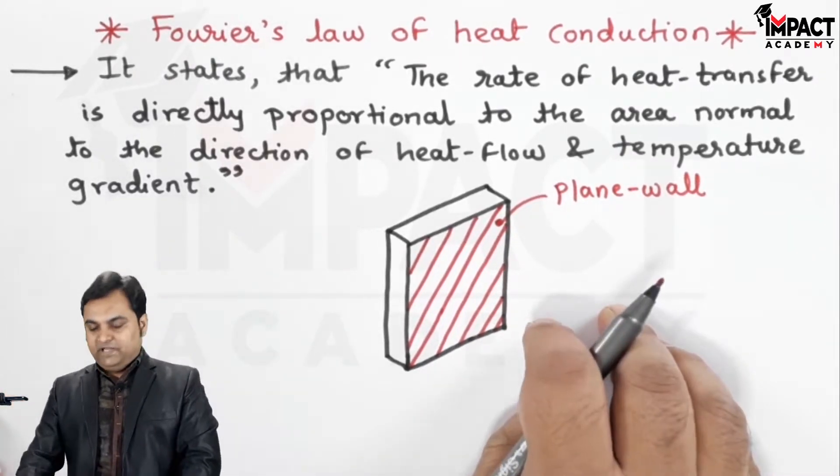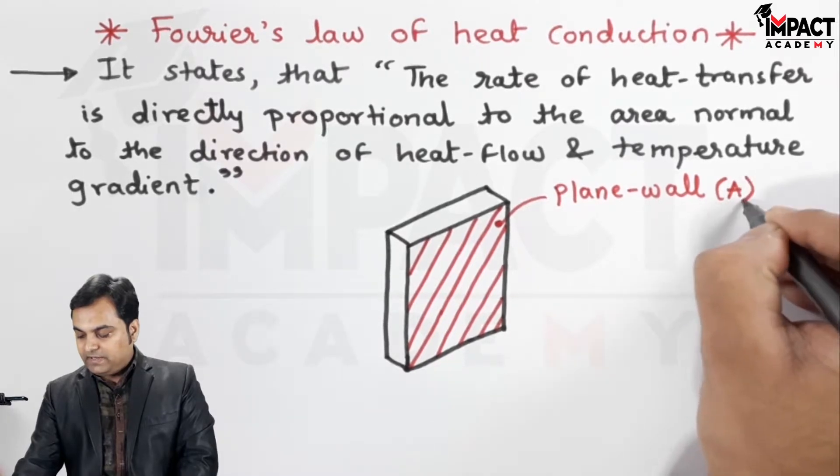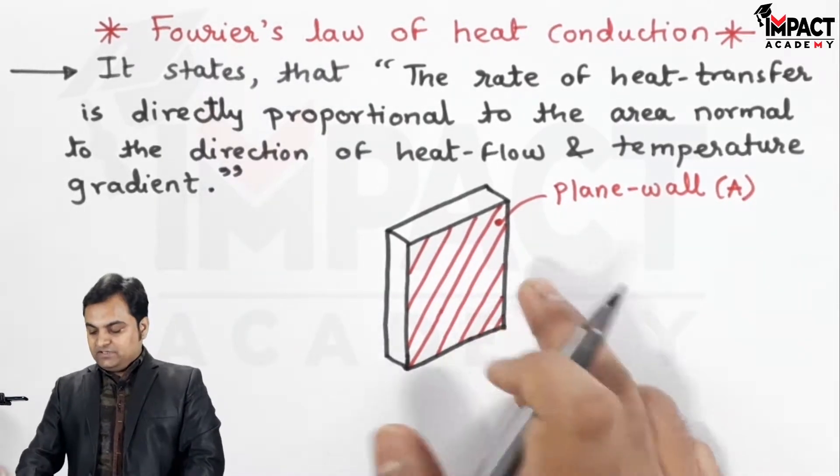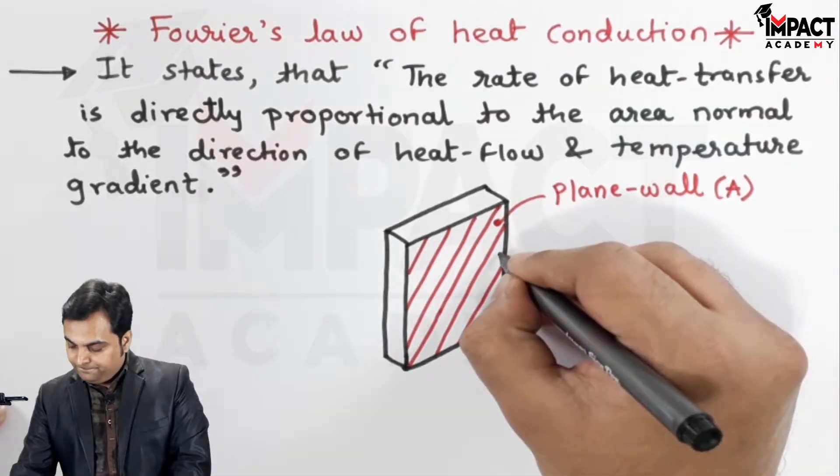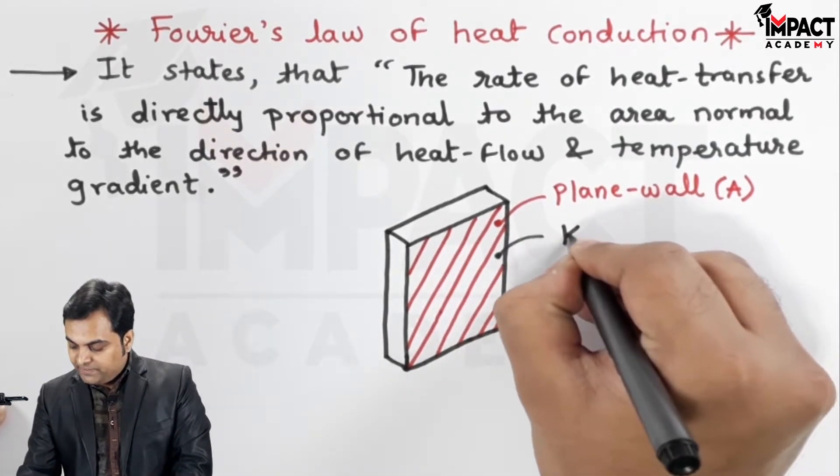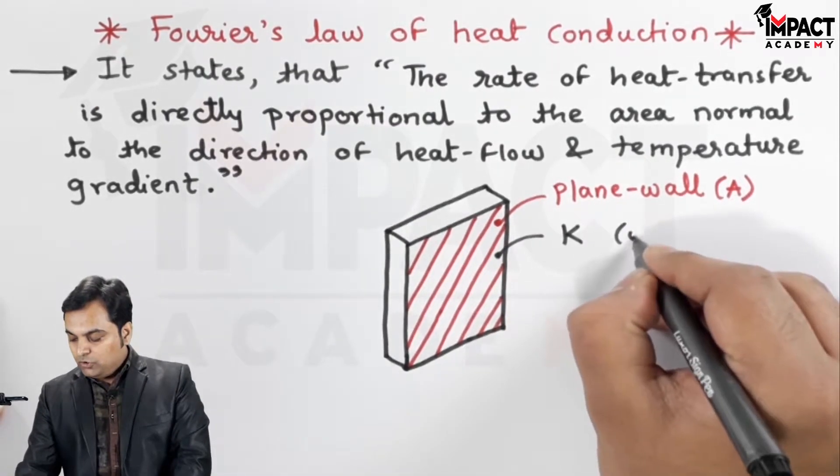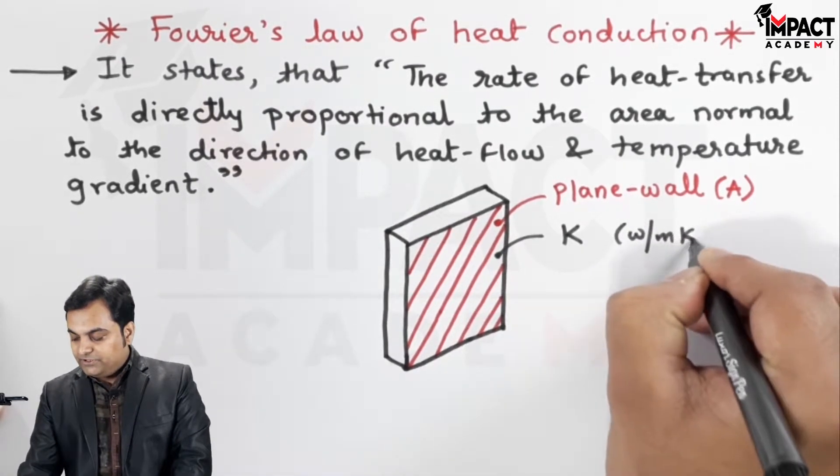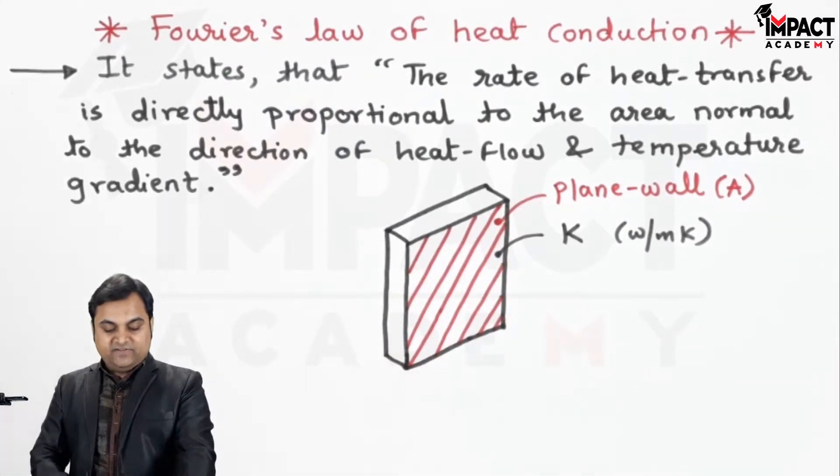So here is a plane wall whose cross-sectional area is denoted by capital A. Next, this wall is having thermal conductivity denoted by K, and the unit of thermal conductivity would be watts per meter Kelvin. Then this wall is having thickness.